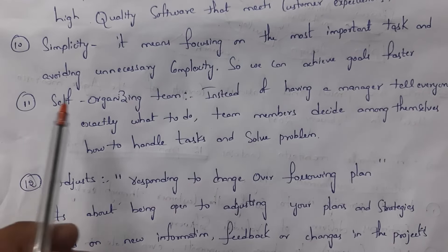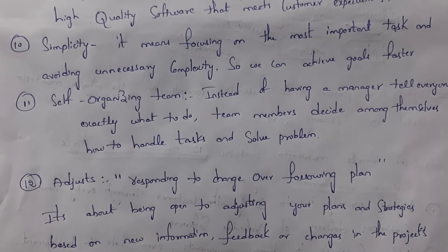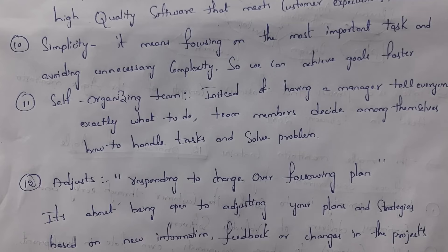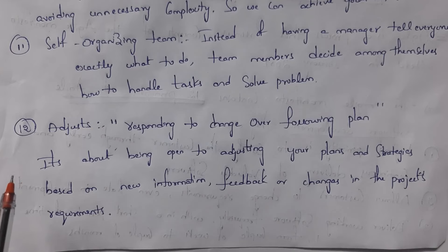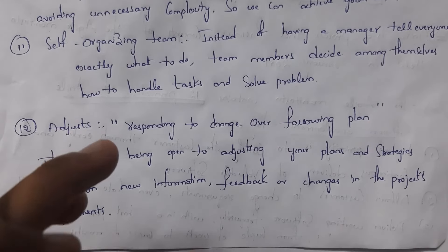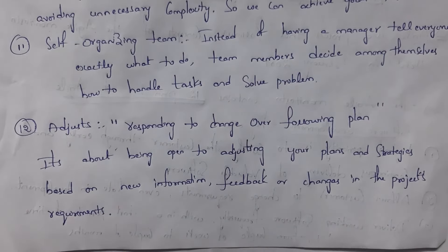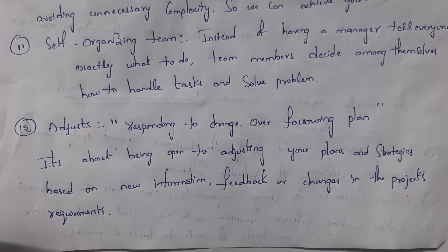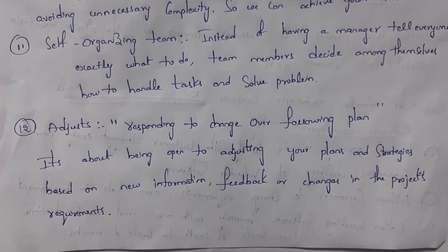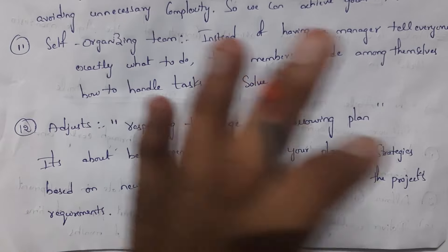The eleventh principle: self-organizing team — in agile, the manager does not guide; team members must communicate with each other and complete their work independently. The twelfth principle: adjustments — whenever the customer gives any changes, the company must immediately adjust their plan. For example, if the customer wants to add staff information to a page, the company must perform that work immediately. These are the twelve principles of the Agile Manifesto.